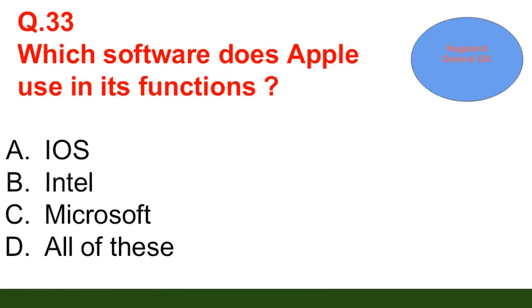Question number 33: Which software does Apple use in its function? Option A: iOS; option B: Intel; option C: Microsoft; option D: all of these. The correct answer is option A — iOS.